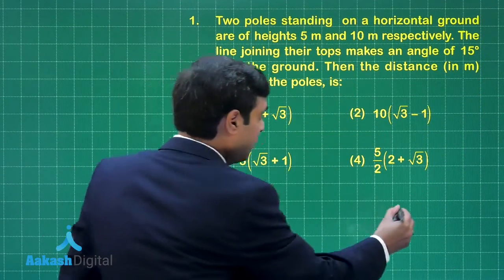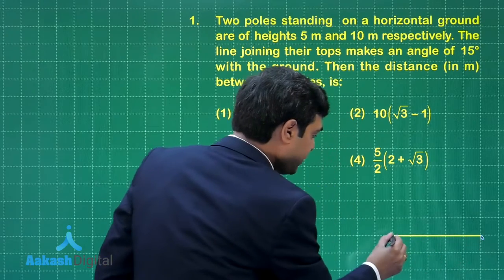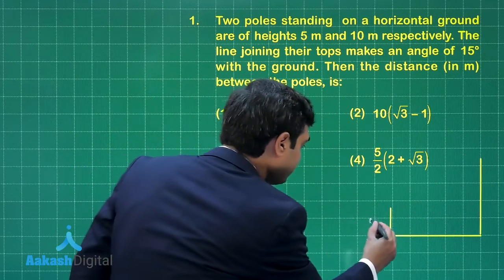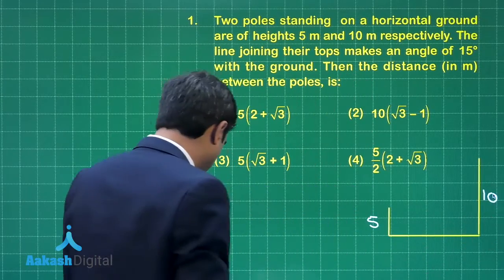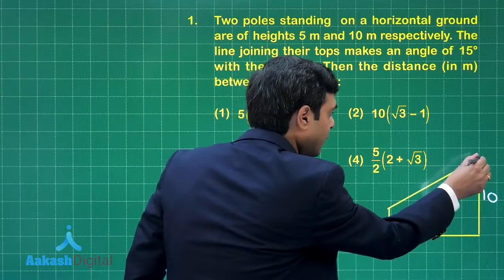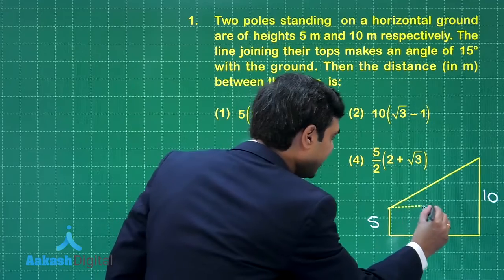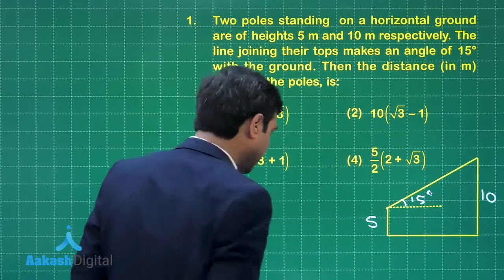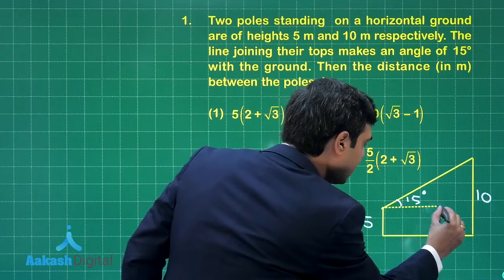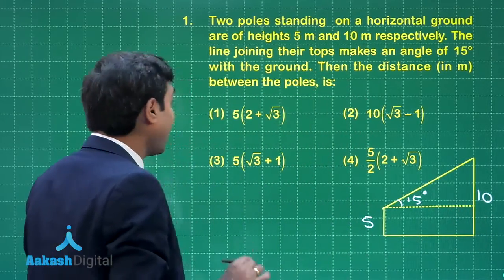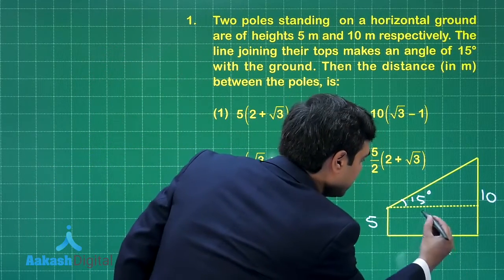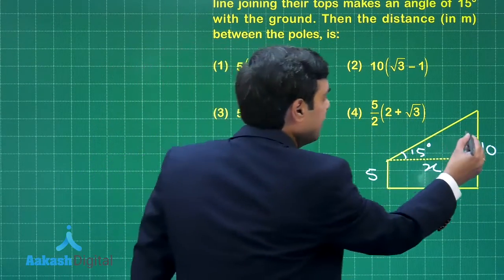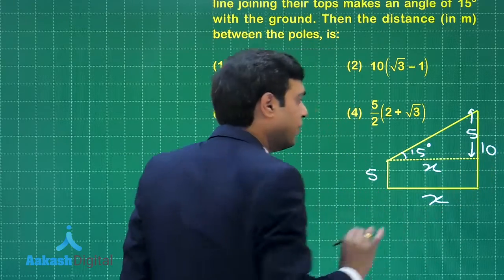It is given: this is horizontal ground, one pole and another pole. The height of the first one is 5 and that of the second is 10. The line joining their tops makes an angle of 15 degrees with the horizontal. We complete the figure accordingly. We have to find the distance between the poles — call it x. Since the heights are 5 and 10, the remaining vertical length is clearly 5 units.